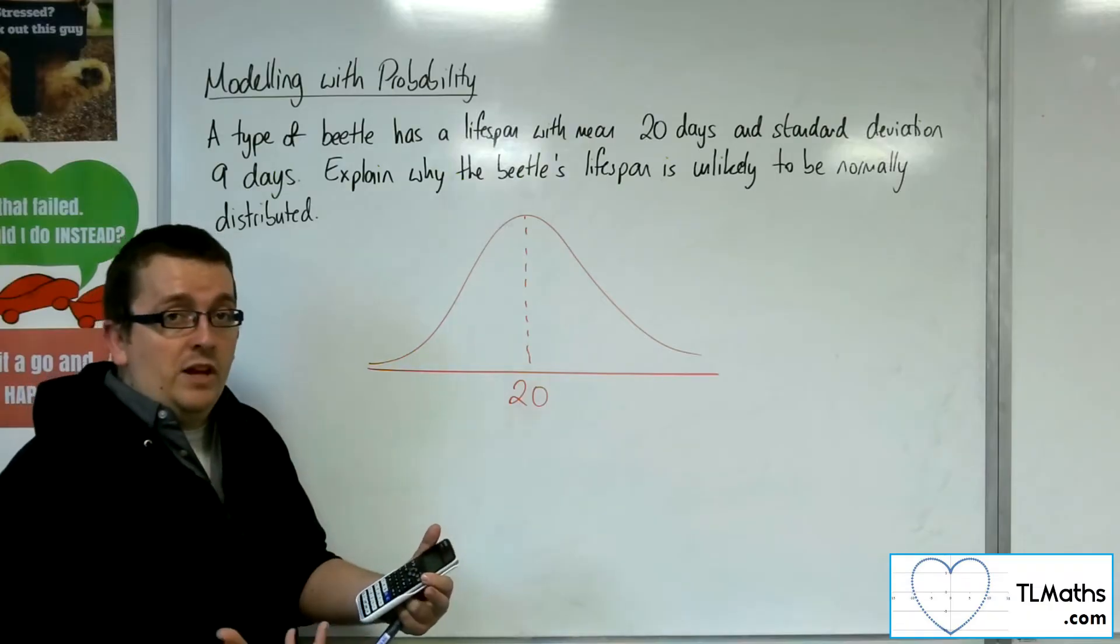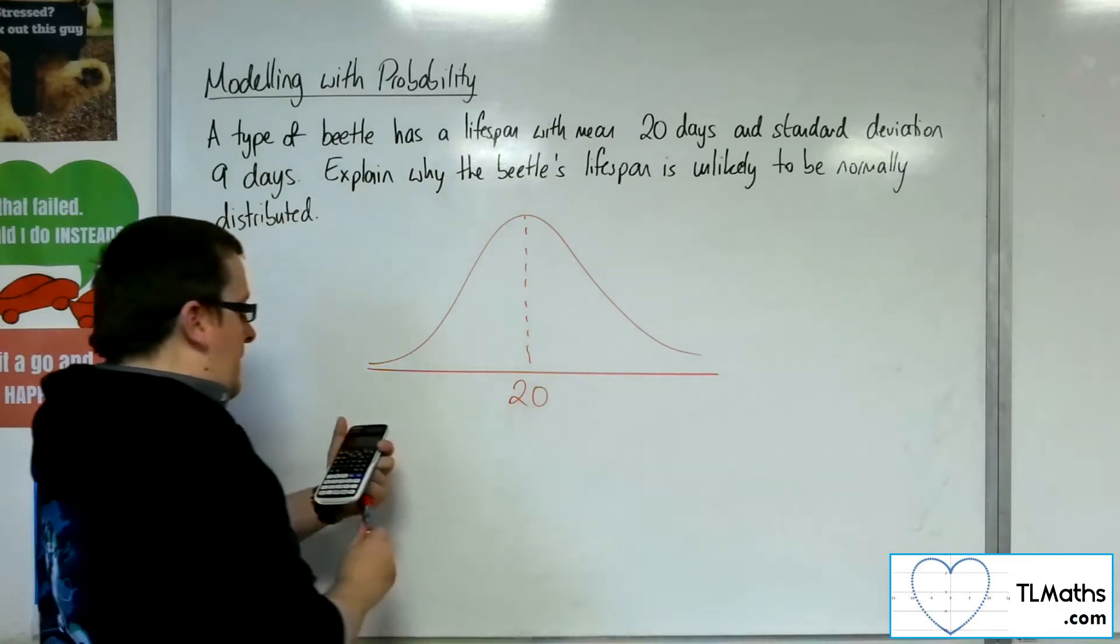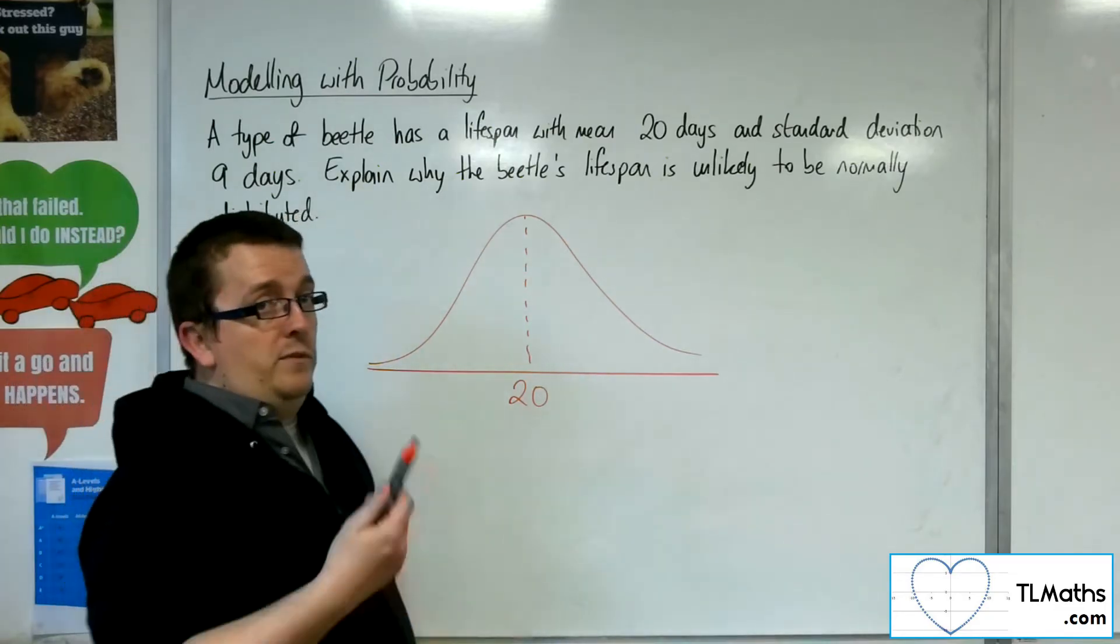The probability of being within three standard deviations of the mean, minus 3 to positive 3, is 99.7%.